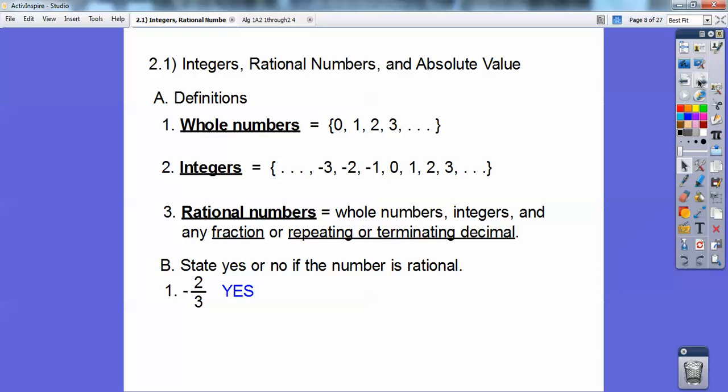How about negative 0.48? Negative 0.48 with a bar on top of it means the 4, 8, 4, 8, 4, 8 goes on forever and ever. So that repeats, so a repeating decimal means yes, that's also a rational number.